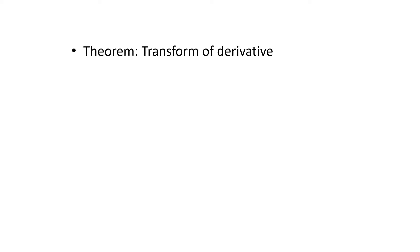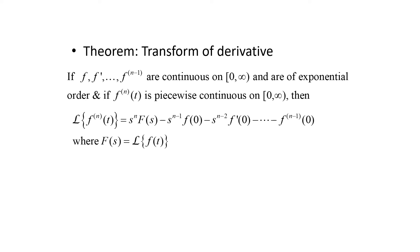This brings us to a theorem that deals with how to take the Laplace transform of a derivative. If f, f prime, all the way up to the n minus first derivative of f are all continuous on the interval from 0 to infinity and are of exponential order, and if the nth derivative of f is piecewise continuous on the interval from 0 to infinity, then the Laplace transform of the nth derivative of f equals s to the n power times F(s) minus s to the n minus first power times f(0) minus s to the n minus second power times f prime(0) minus s to the n minus third power times f double prime(0), and so on, where the power of s decreases to 0 and the derivative on f increases until we get to n minus 1.